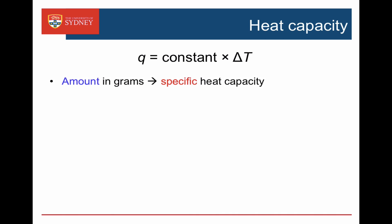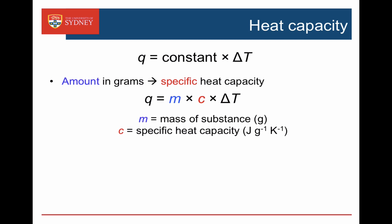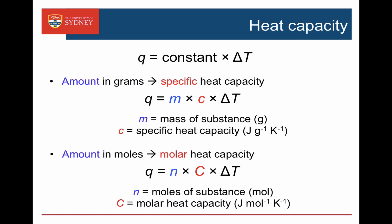If we have an amount in grams, we're talking about the specific heat capacity. The heat Q equals the mass in grams multiplied by the specific heat capacity in joules per gram per Kelvin, multiplied by the temperature change delta T. If we have the amount in moles, we use the molar heat capacity: Q equals the number of moles multiplied by the molar heat capacity multiplied by delta T.